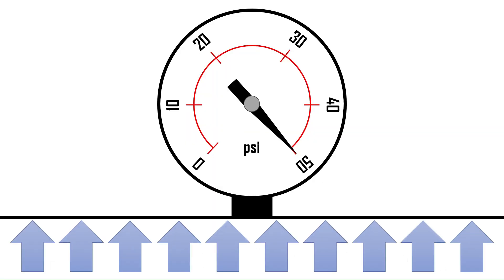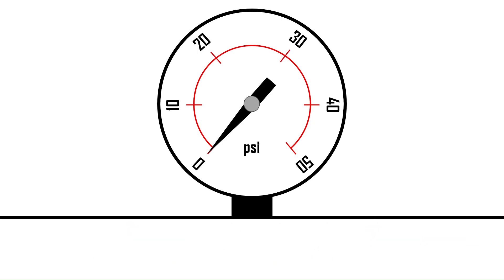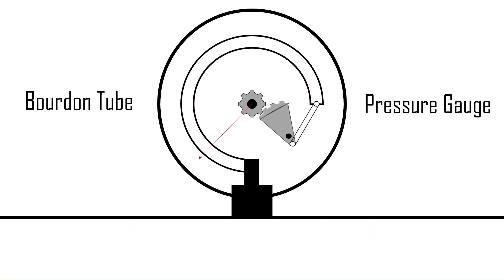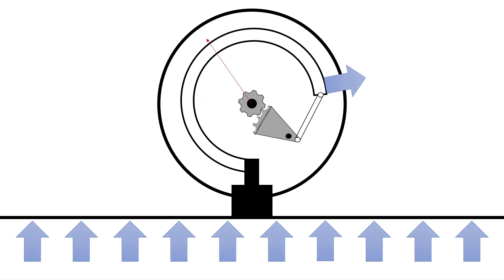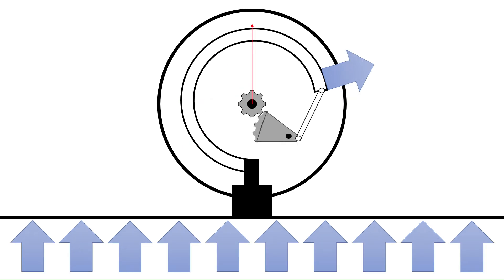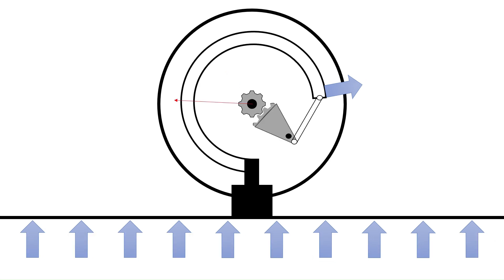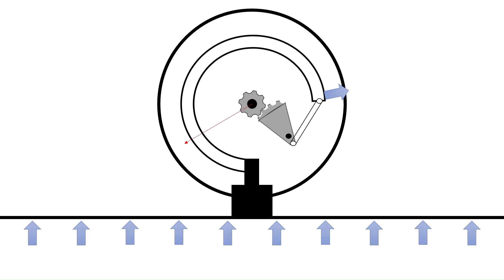Before we look at the pencil, let's look at the most common pressure gauge today, the Bordon tube. Invented way back in 1849, it works using a C-shaped bent tube. When pressure is applied, an effect causes the tube to try and straighten out.